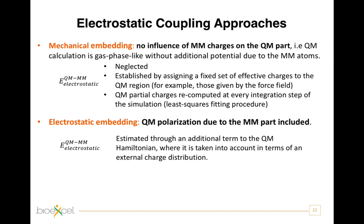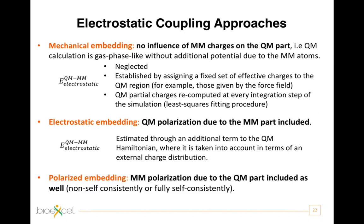An improvement over mechanical embedding is to include polarization effects of the quantum region due to the presence of classical atoms in the MM region. In this so-called electrostatic embedding scheme, the electrostatic interactions between the quantum and MM subsystems are handled during the computation of the electronic wave function. That is, E_QM/MM electrostatic, which has to be added in the quantum Hamiltonian, depends on both the classical charges and the quantum charge density. Increasing further the level of sophistication implies including in the model also the polarizability of the classical atoms. In this approach, called the polarization embedding scheme, both regions — quantum and classical — can mutually polarize each other.